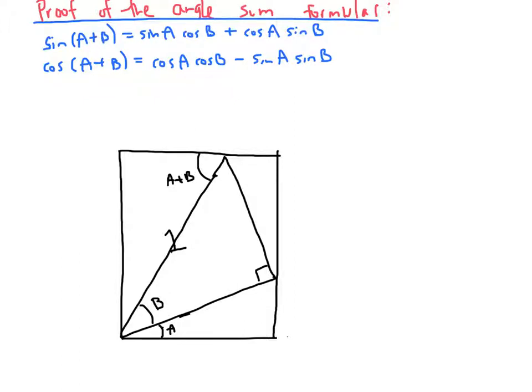Also, this skinny angle here must have the same measure as A down here. Because this angle is 180 degrees minus 90 degrees minus this angle here. And this angle A is also 180 degrees, the measure of the angles in the triangle, minus 90 degrees minus that same angle. So I'll label this skinny angle with A.